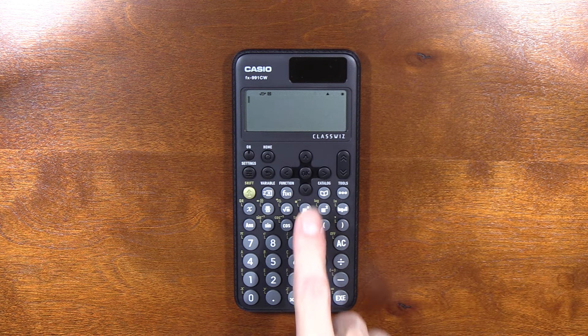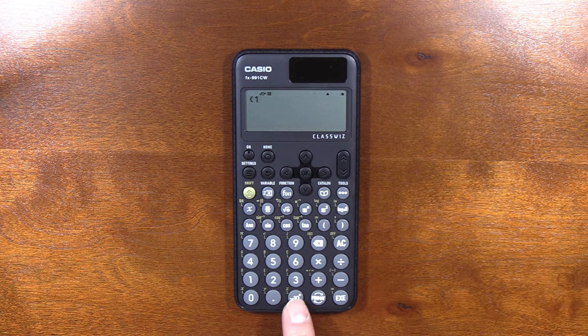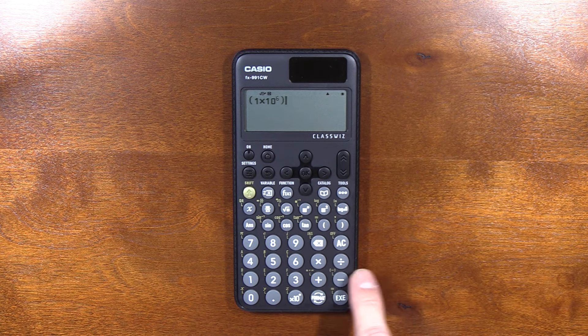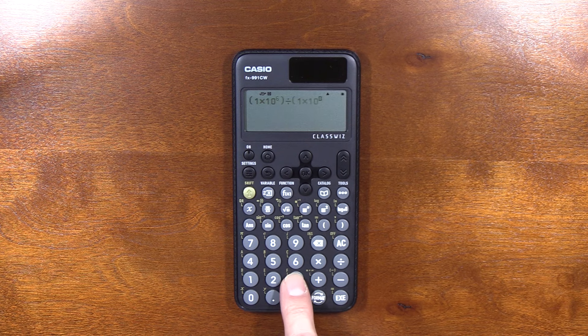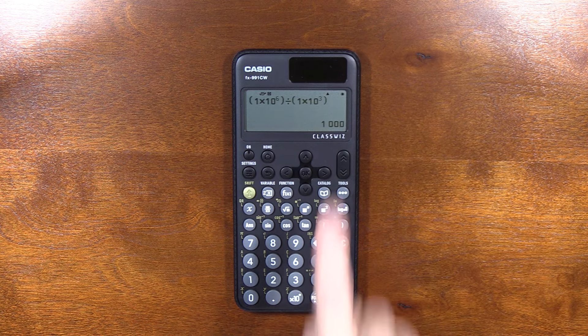The safest way to handle scientific notation on this calculator is going to be to use parentheses. One times ten to the sixth, go over, close it, divide. Open parentheses, times ten to the third, over, close parentheses. When you do it that way, you'll get the right answer.